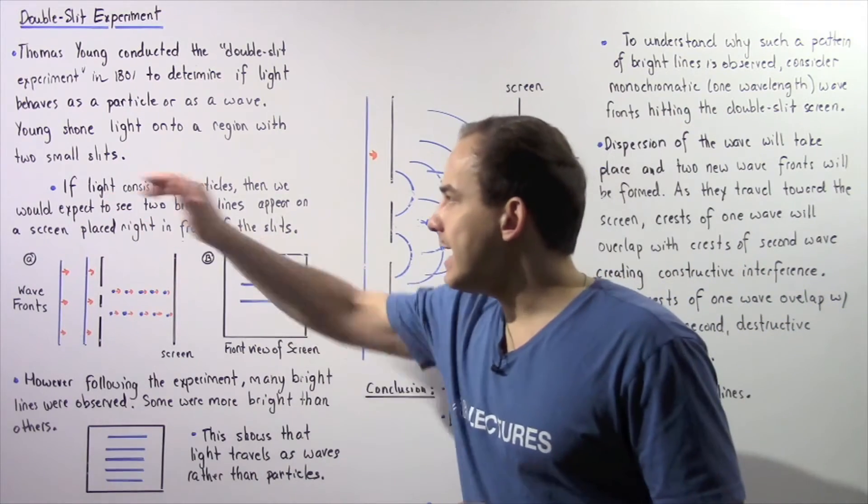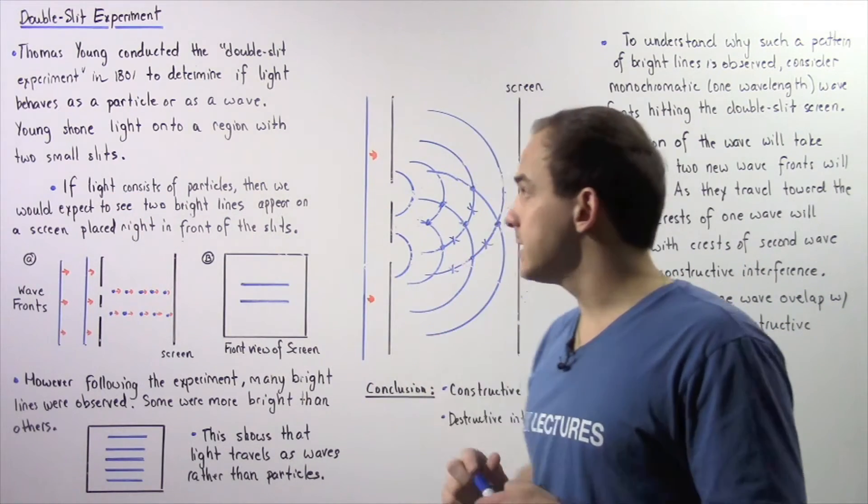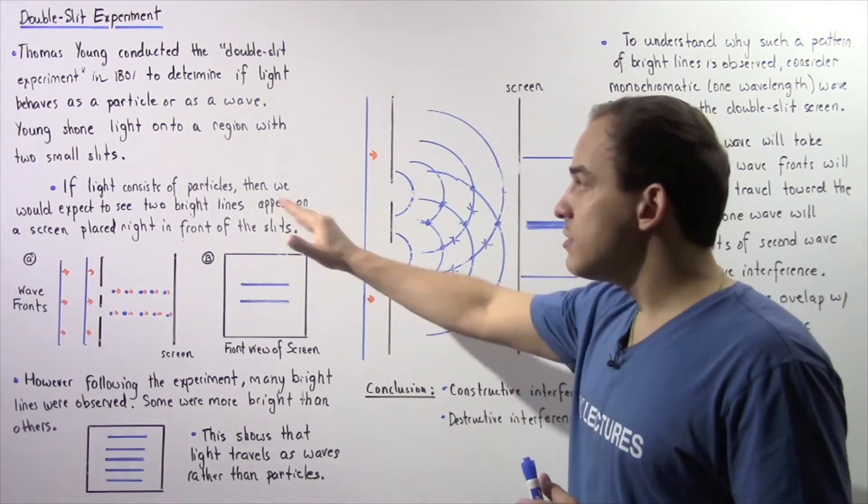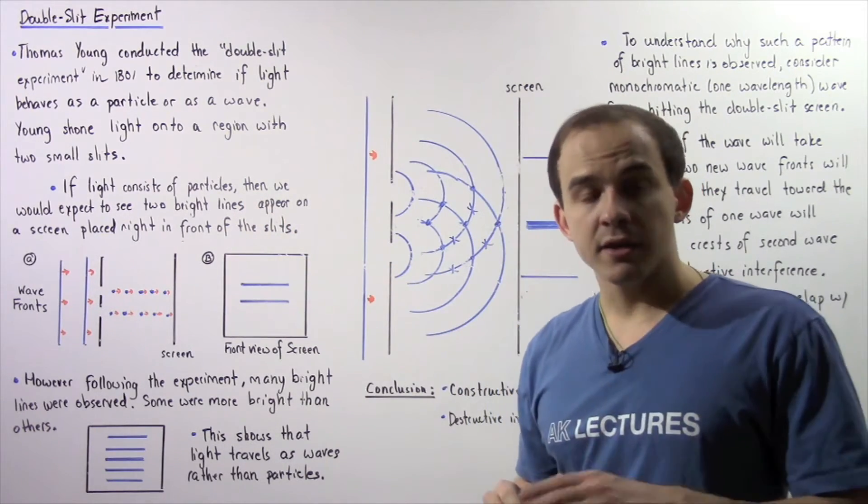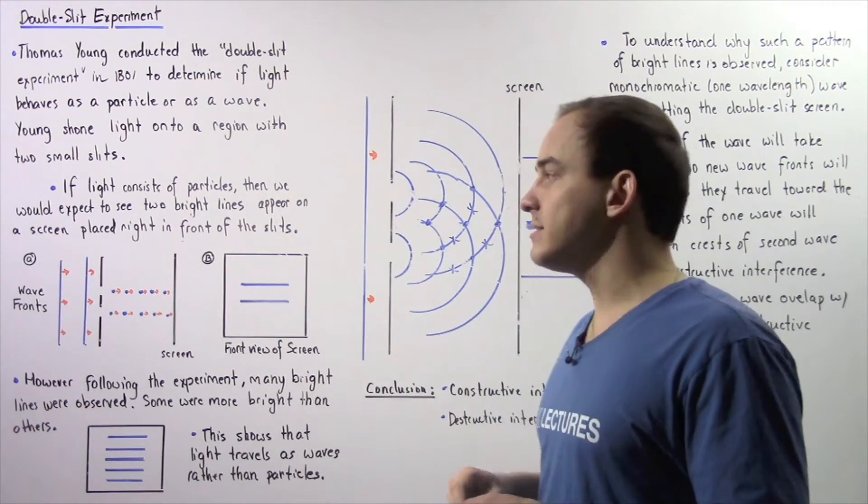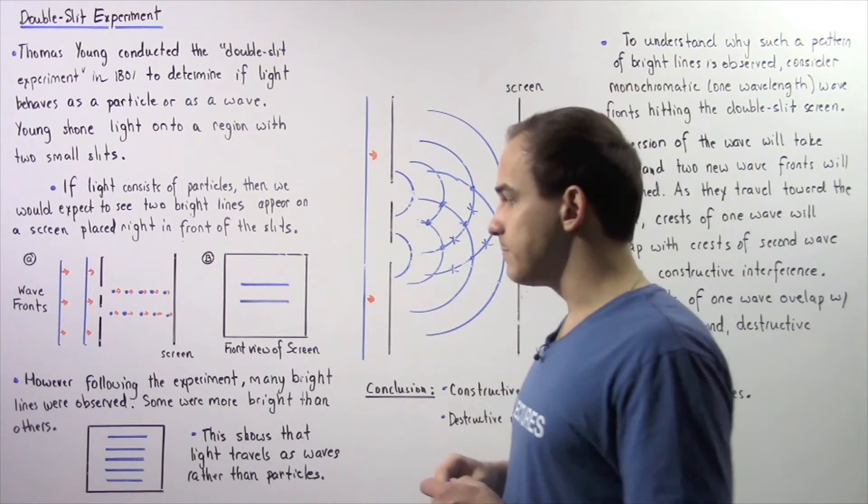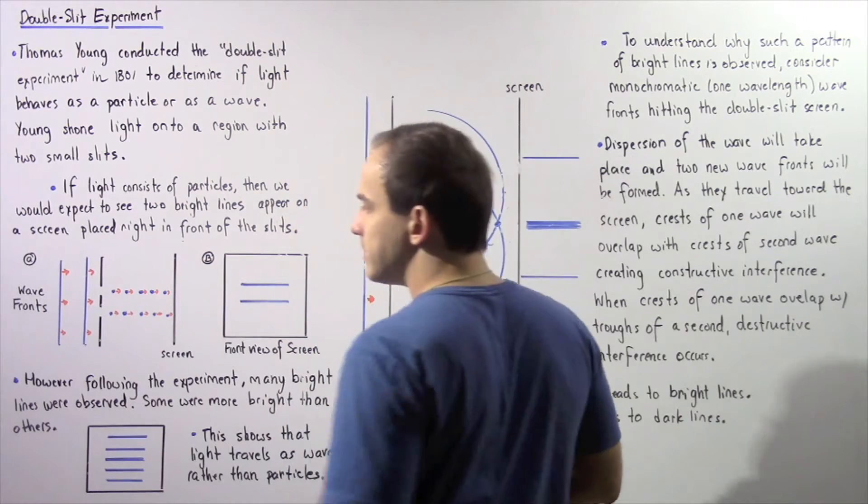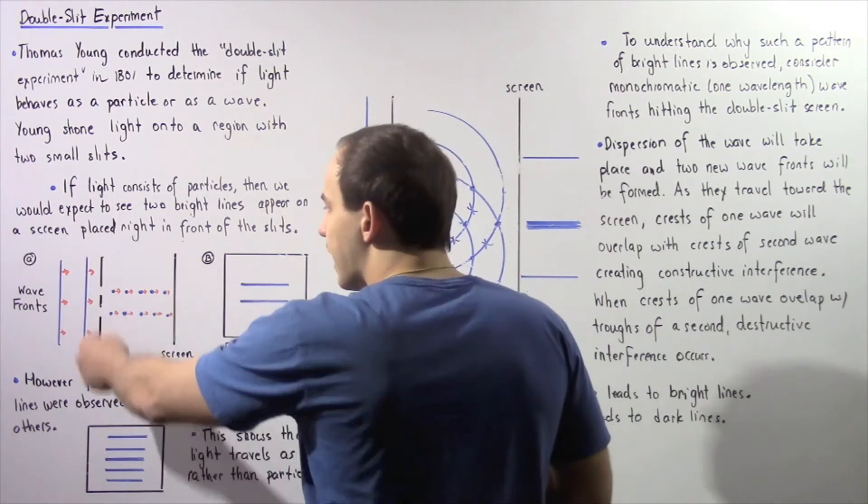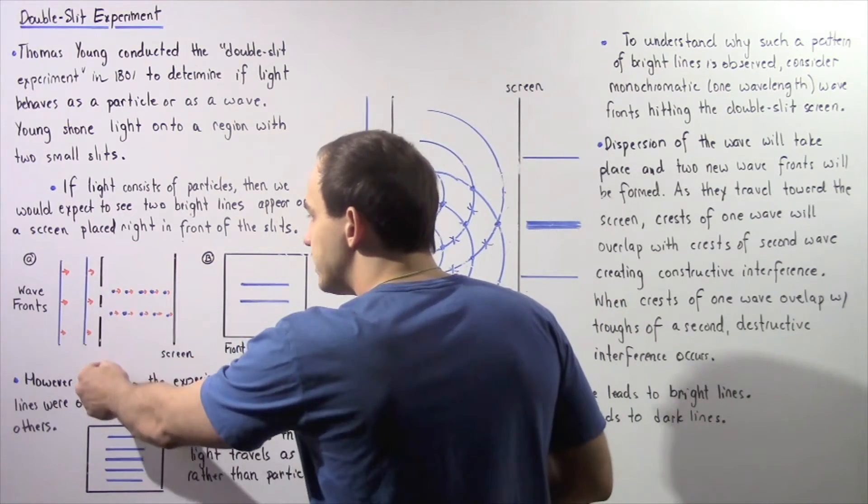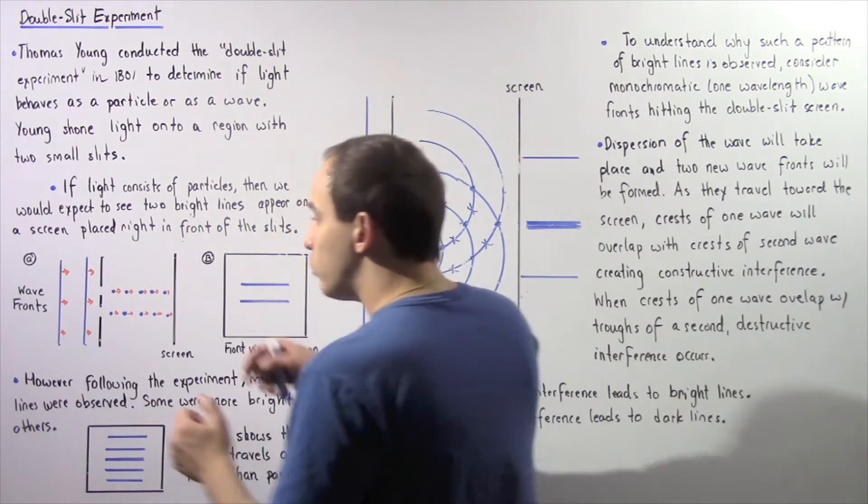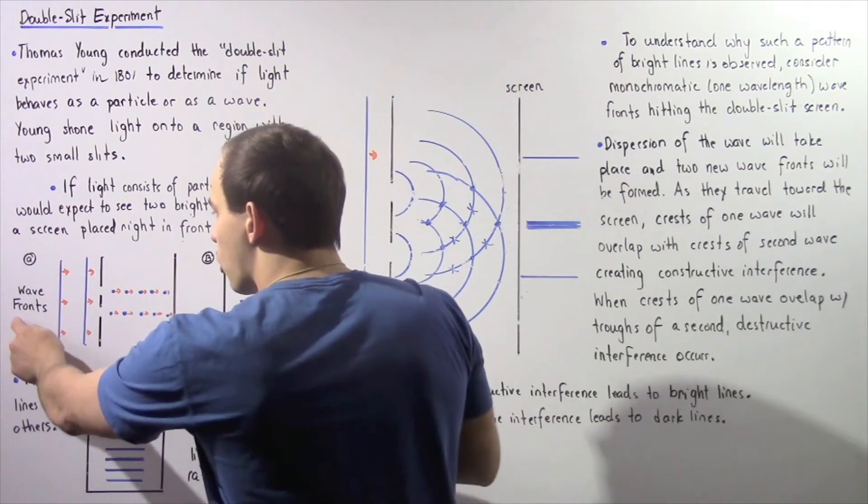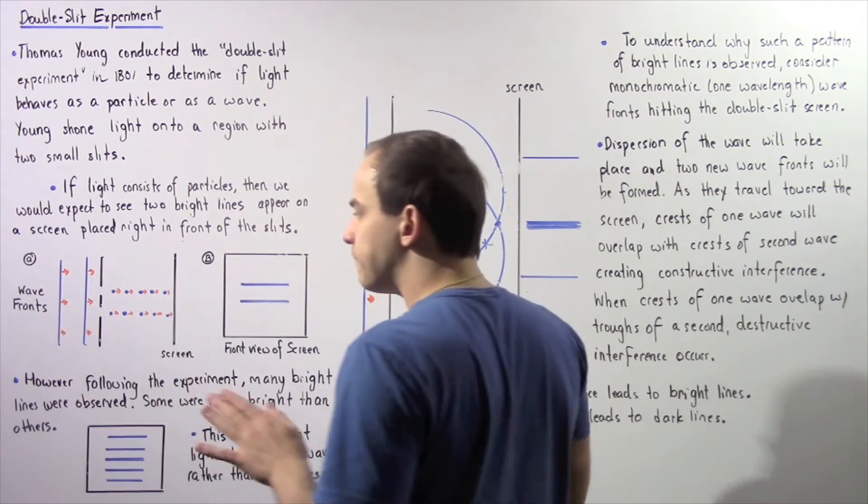He said if light in fact consists of particles, then we would expect to see two bright lines appear on that screen placed in front of the double slit. Let's examine diagram A. In diagram A we have the double slit that contains opening 1 and opening 2, and we shine light as shown by the two wave fronts.